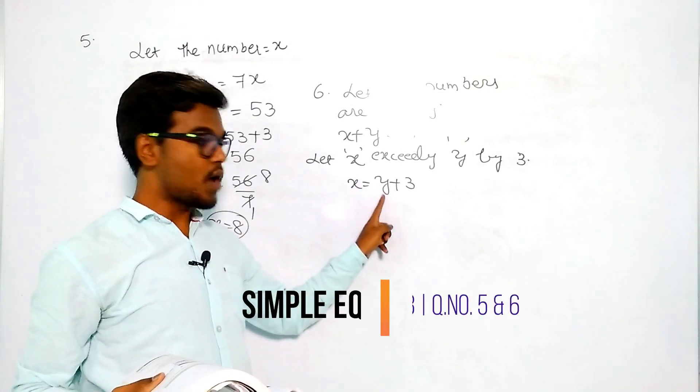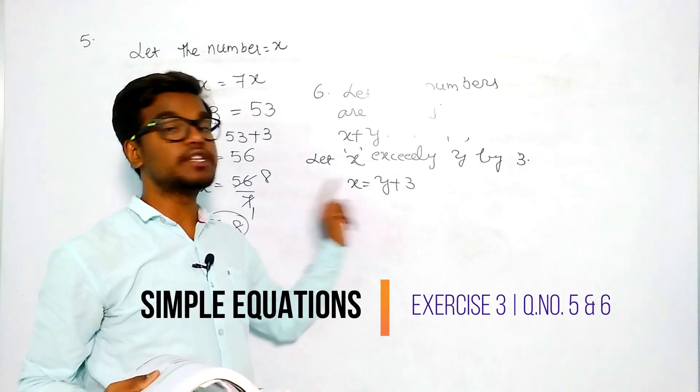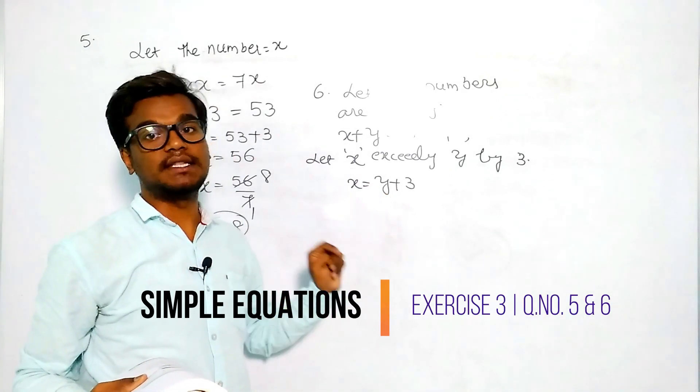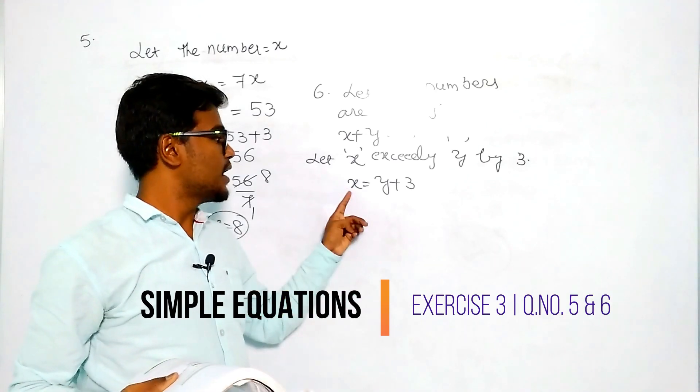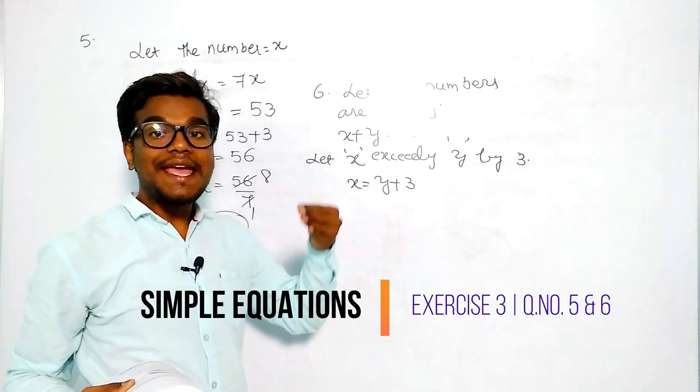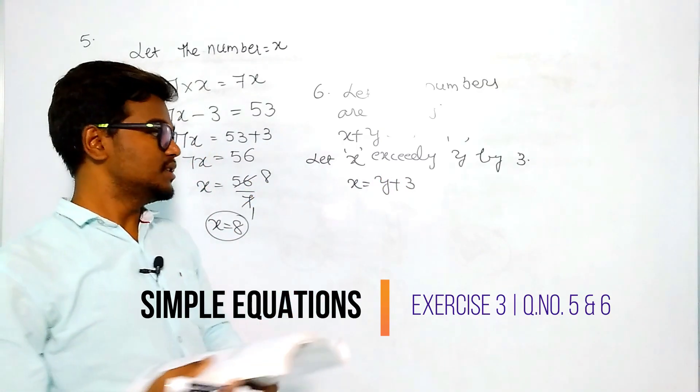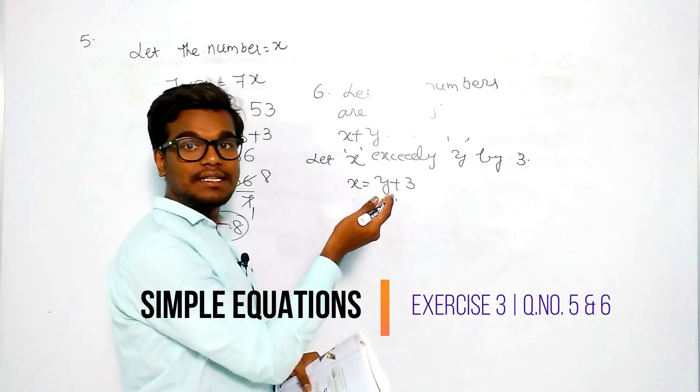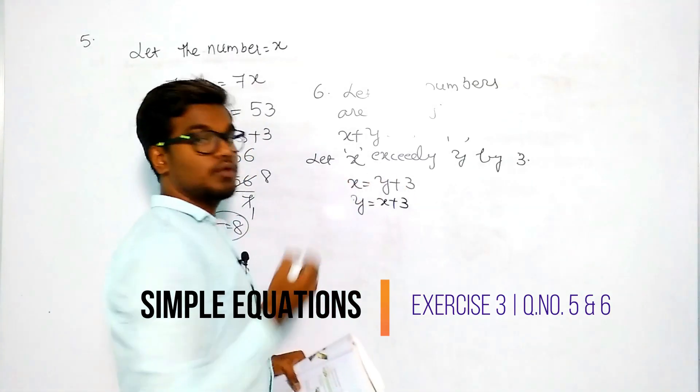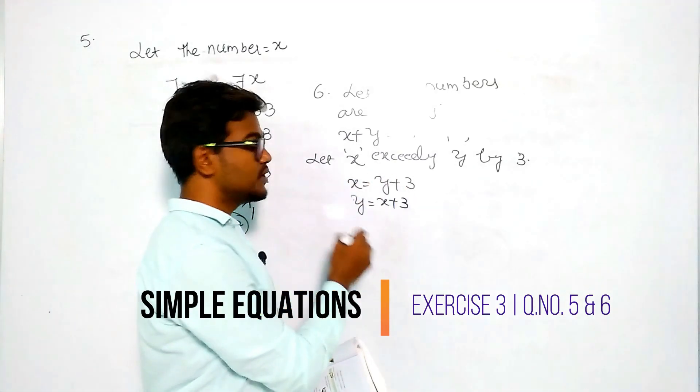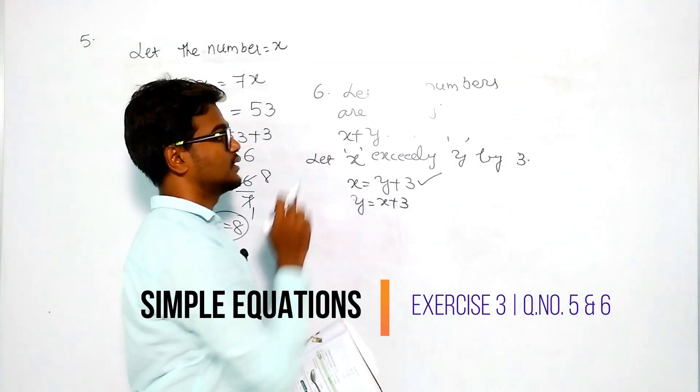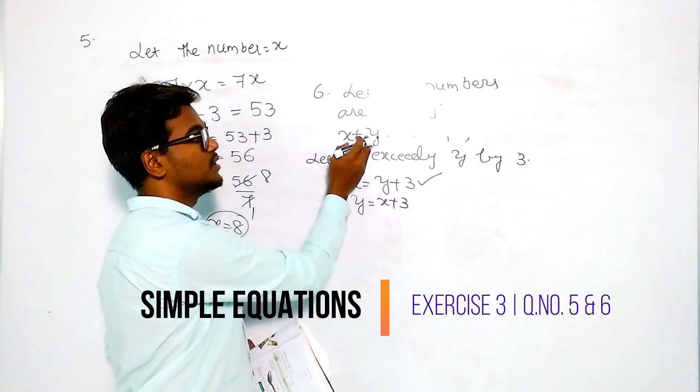x exceeds y by three - exceeds means we need to take addition. If y exceeds x by three, then y equals x plus 3. Whatever it is, we are taking this equation. Substitute x value in this and we will get y.